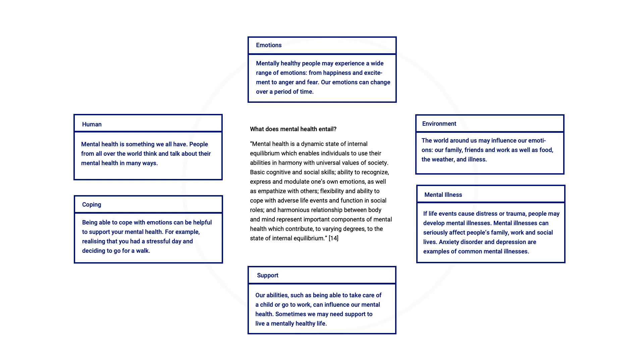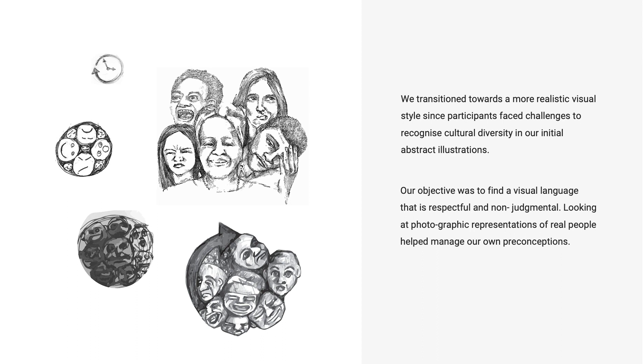Next, I would like to share our design reflections. Here you can see how we transitioned towards a more realistic visual style, since participants faced challenges recognizing cultural diversity in our initial abstract illustrations. We wanted to find a visual language that is respectful and non-judgmental. For example, we found it helpful to look at photos of real people to become aware of our preconceptions. We designed this series of illustrations to support reflections on coping strategies. Feedback suggested that the teacup and saucer can be perceived as a strong reference to British tea culture. The second iteration is refined, showing a woman holding a mug in her hands.